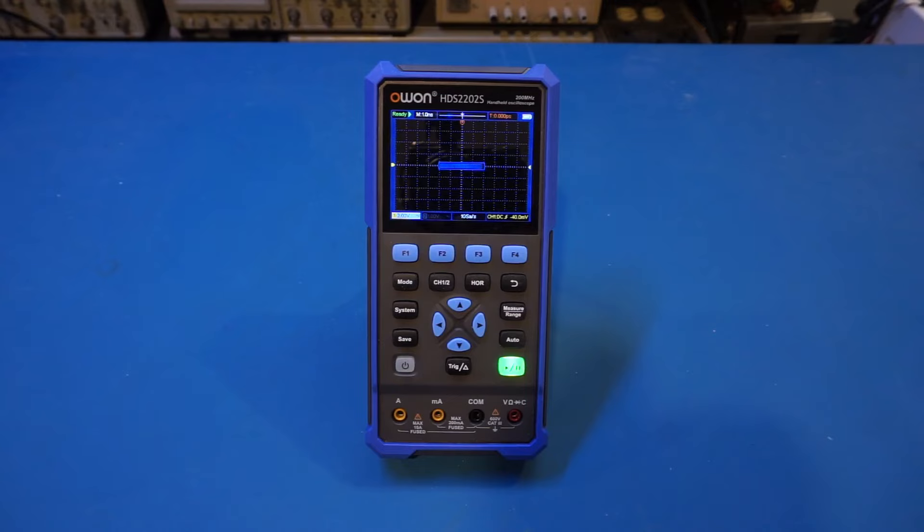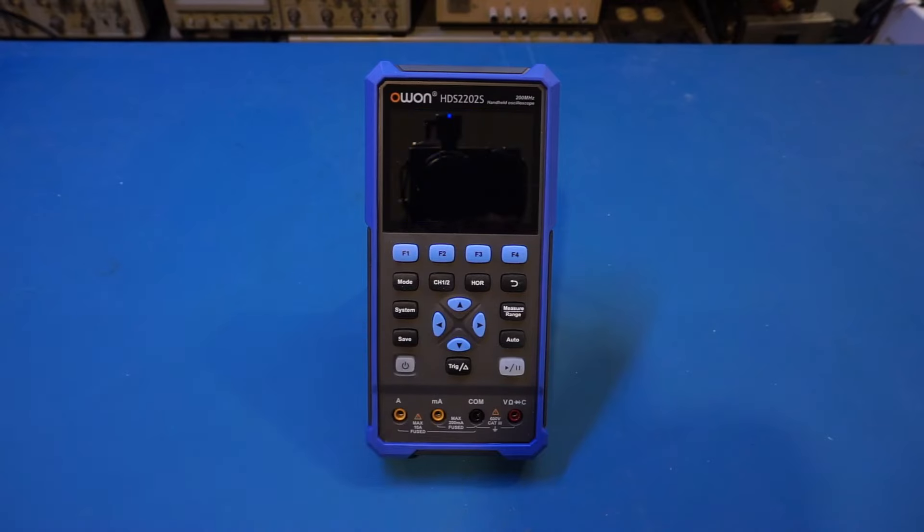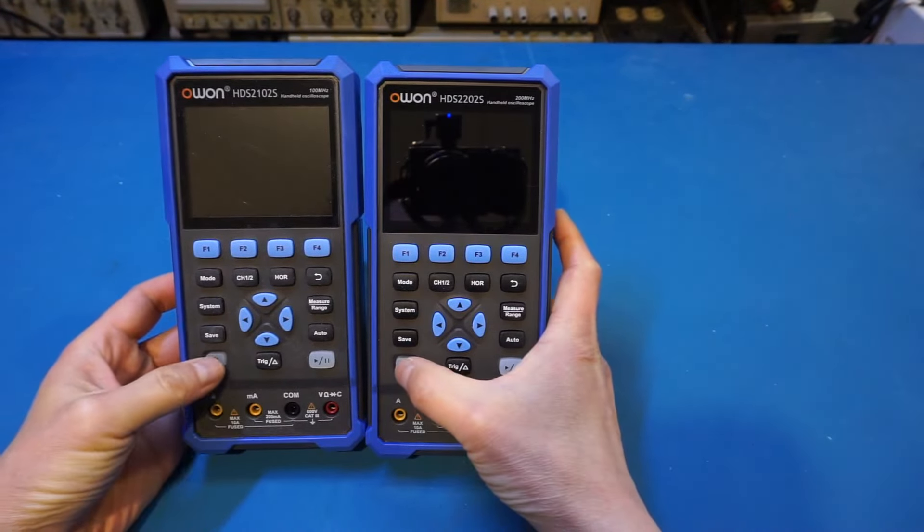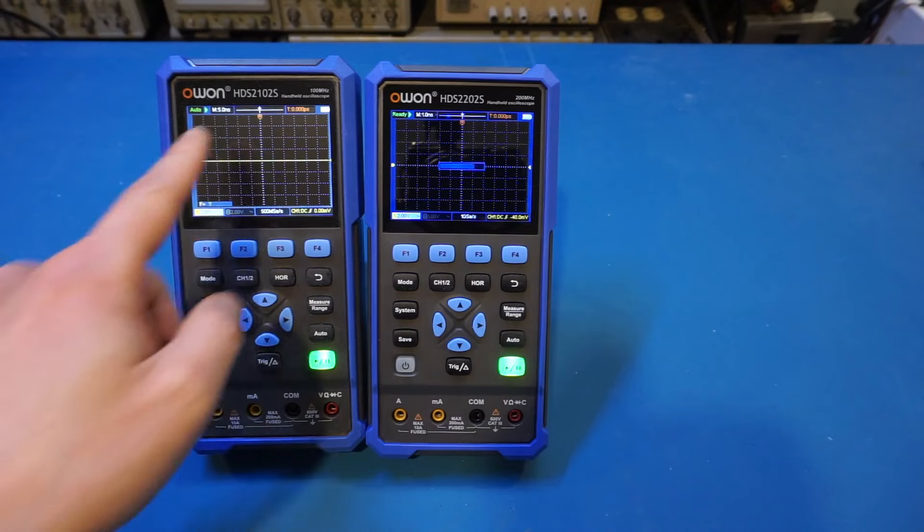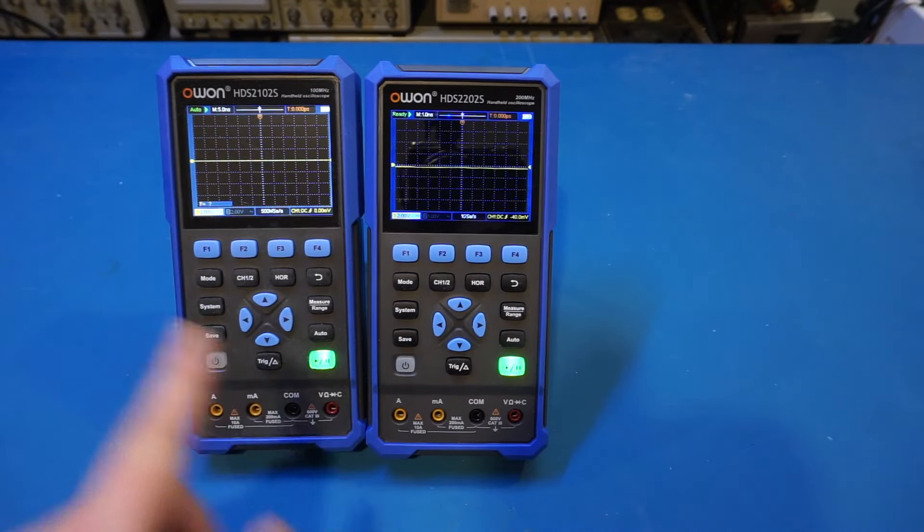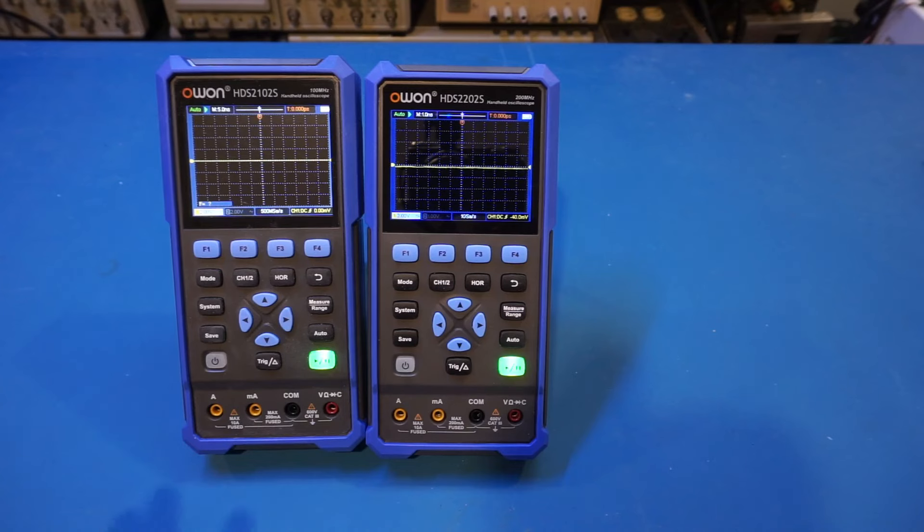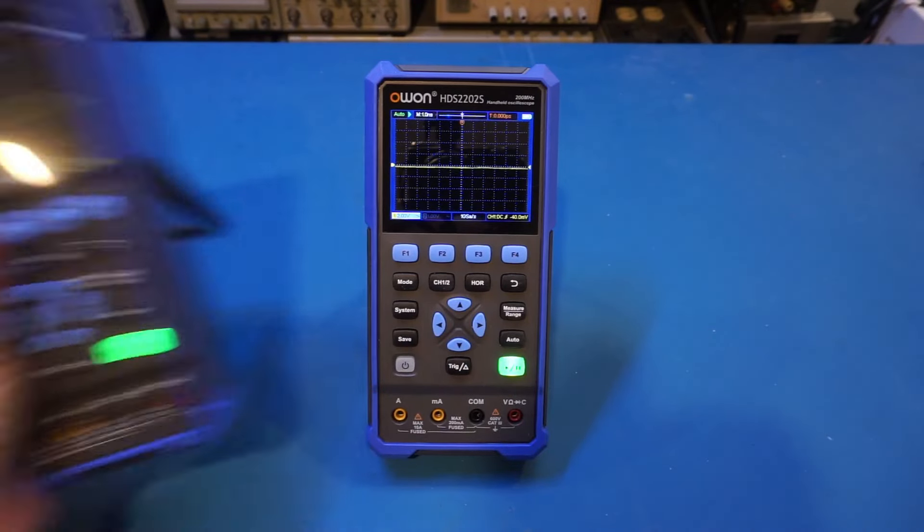The first thing I noticed immediately is that it actually takes slightly longer to boot up than what I remembered with the other models. Let me power it off, and I'm going to compare it with a 2102 here. Let me put them side by side, and let's power them on at the same time. You can see here the 2102 boots up immediately, whereas this one has some kind of post-processing after the initial boot up. I'm not entirely sure why this is the case, but presumably has something to do with the revamped front end, which now supports 200 MHz bandwidth.